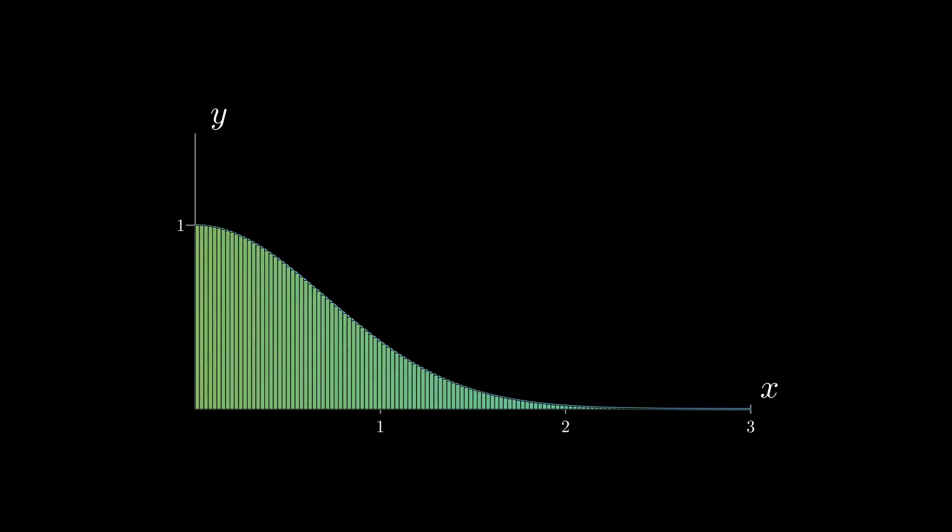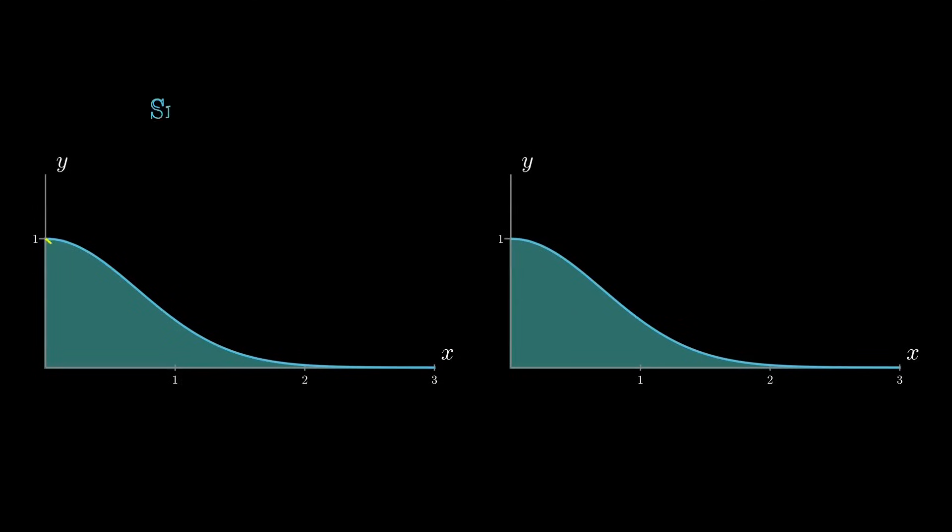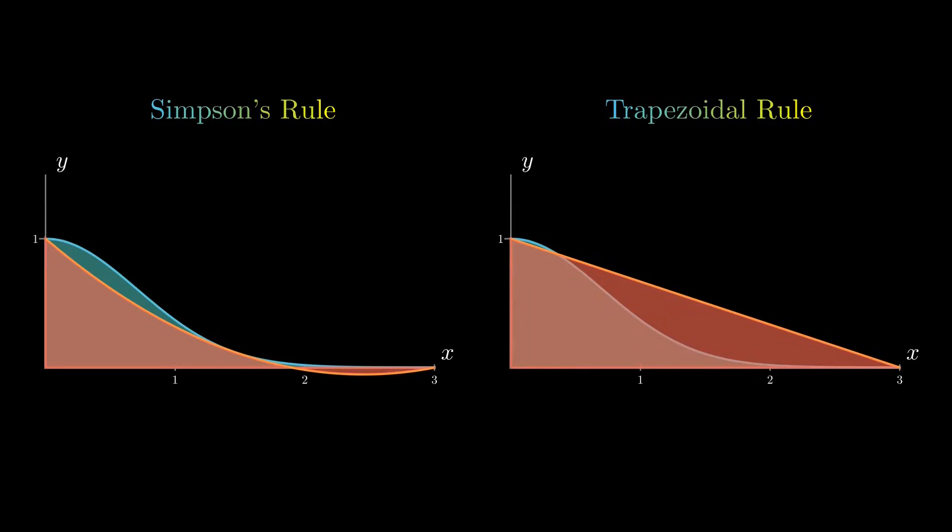You may have already heard of deterministic approaches that tackle this problem, such as the Simpson's rule or the trapezoidal one. Being deterministic, these methods will provide the same approximation every time we compute it, since they have a closed formula.